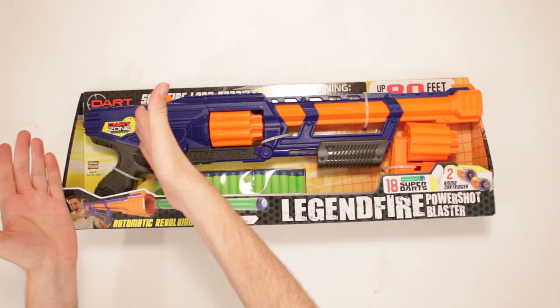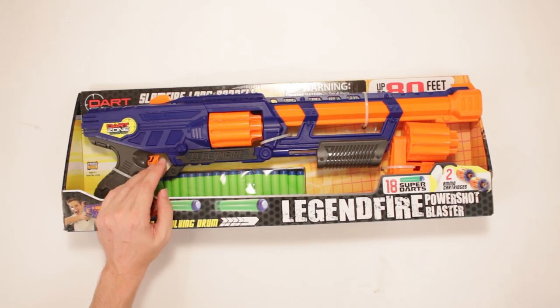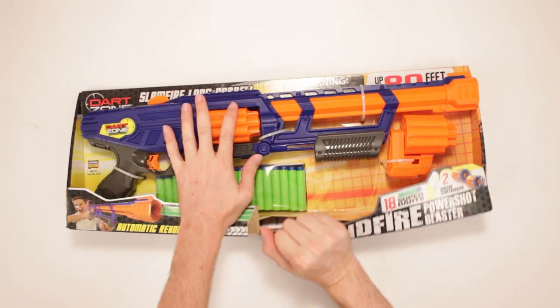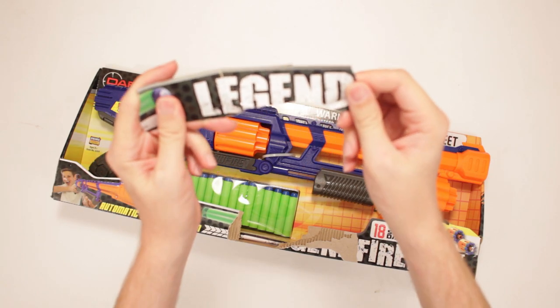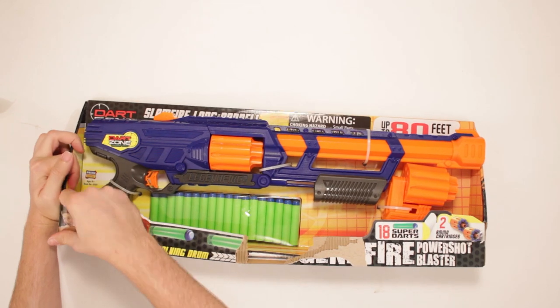This is Dart Zone Covert Ops Legend Fire Power Shot Blaster! That's major. You know it's not no rookie, because it says that it's a legend. Or leg, leg, leg, that's the big deal, right? There it is.